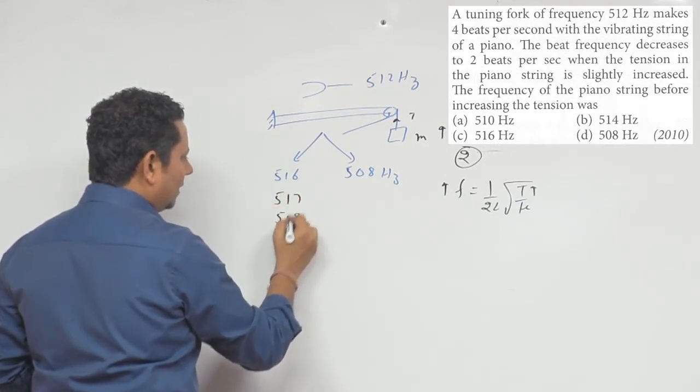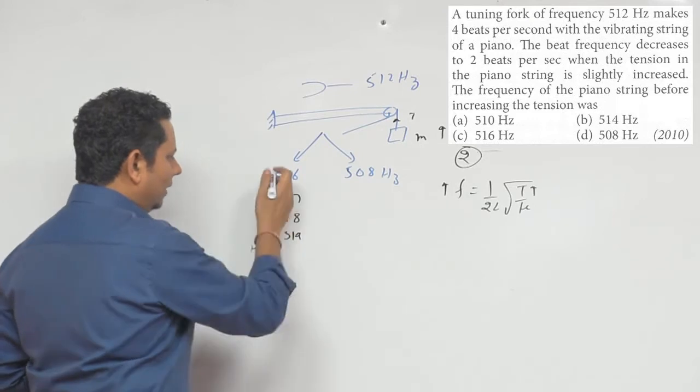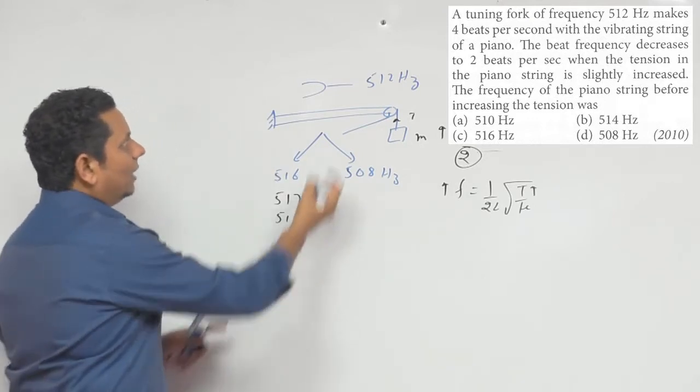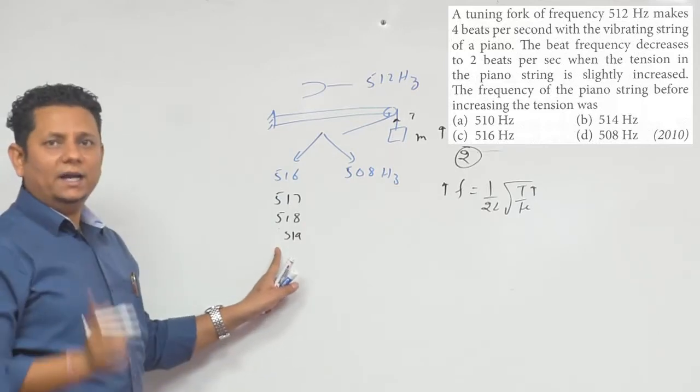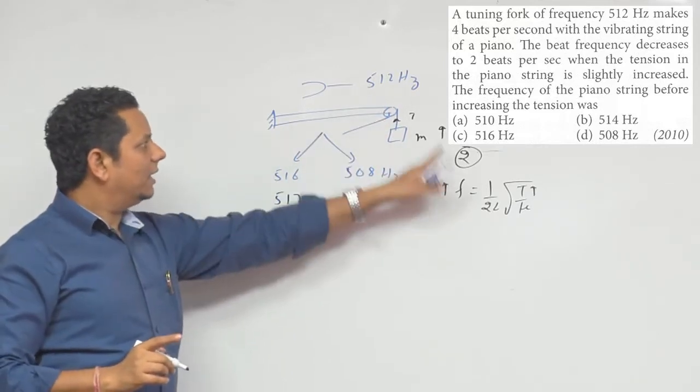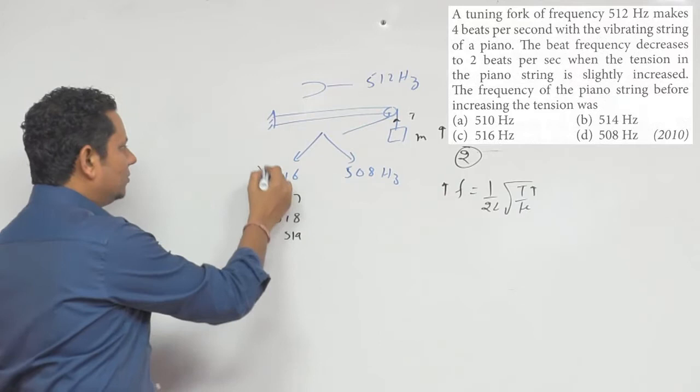I'm considering the two values. If we increase from 516, let's say to 517, 519, the difference from 512 increases. So if we had 516...